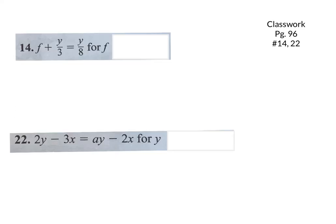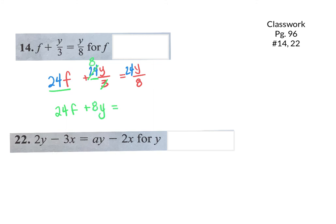For the first practice problem, we have fractions, so we want to find the common denominator and multiply everything by it. My denominators are 3 and 8 — what is the common denominator? It's 24. So I have (F plus Y) over 3 equals Y over 8. I'm going to multiply every single piece by 24. On the left: 24 divided by 3 becomes 8, giving 8 times (F plus Y). On the right: 24 divided by 8 becomes 3, giving 3Y.